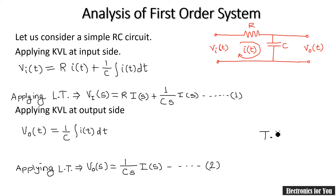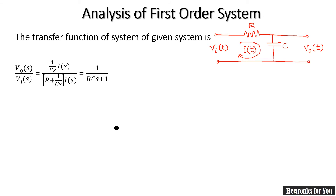The transfer function is the Laplace transform of output divided by input, so equation 2 divided by equation 1. Cancelling I(s) and simplifying, with common denominator RCs+1, the Cs terms cancel, giving us Vo(s)/Vi(s) equal to 1 over RCs plus 1.